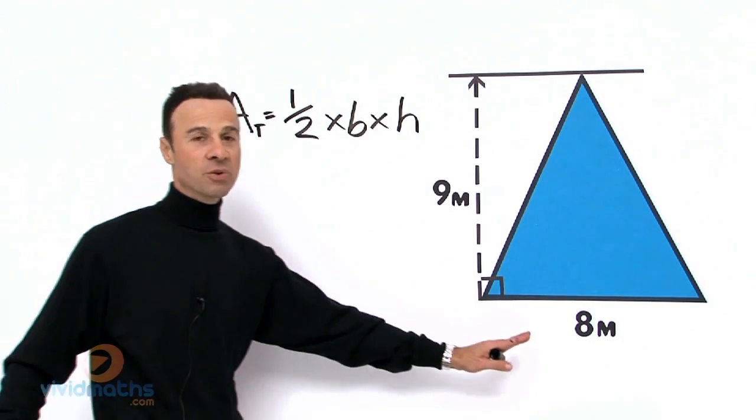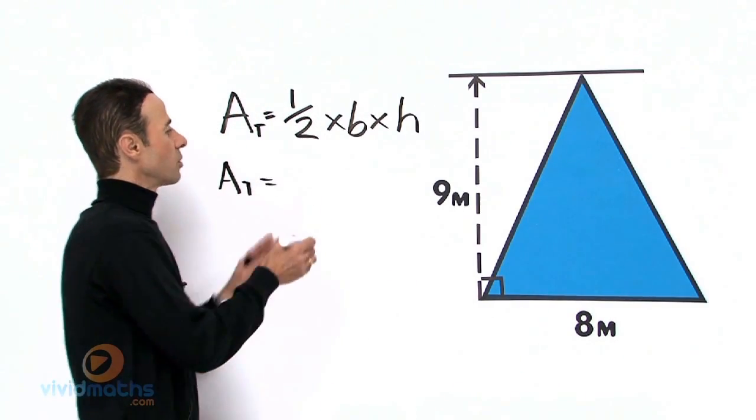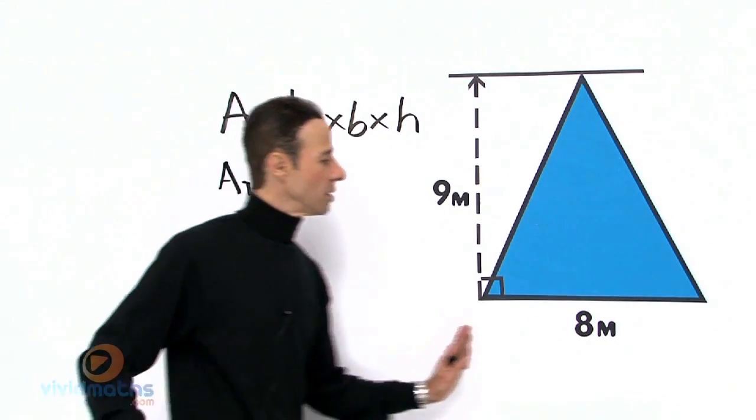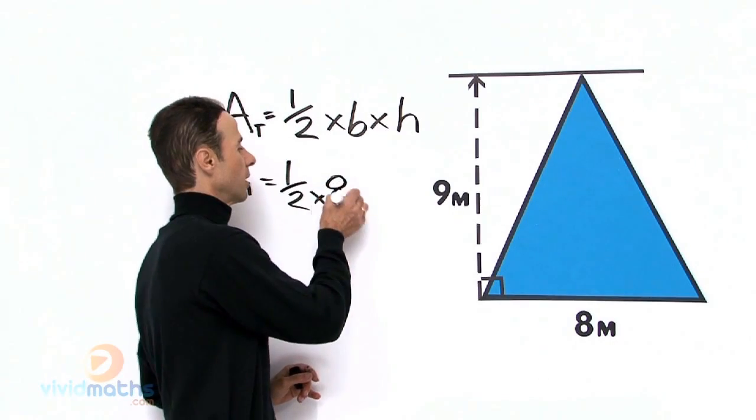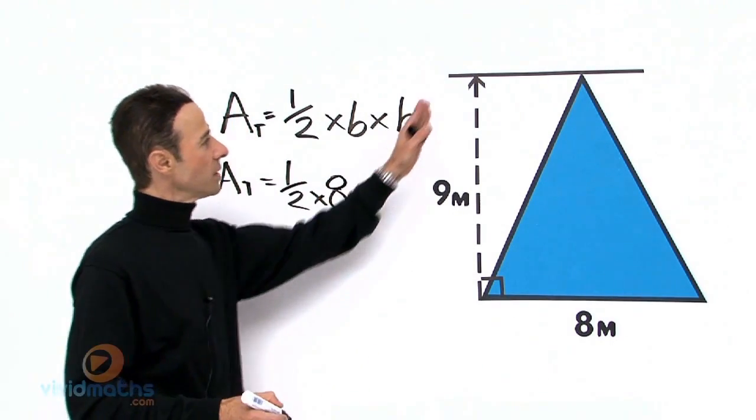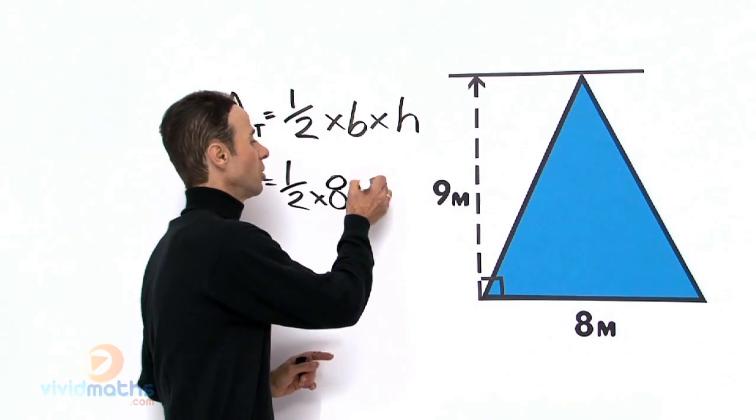Let's put in the values that we have here. So area of this triangle equals a half times the base across there, corner to corner right at the bottom, times the perpendicular height—it must be perpendicular at right angles—which is 9 meters.